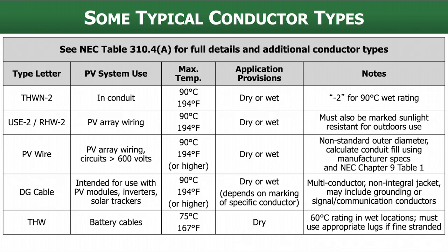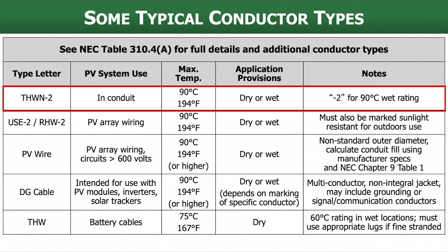One conductor we use a lot in conduit is THWN-2. It has a maximum temperature rating — that would be its insulation rating — of 90 degrees Celsius. That dash-2 tells us it has that 90°C rating in wet conditions, so it can be used in both dry and wet conditions. A conduit outdoors is considered a wet condition. This is what we typically run in conduit for DC wiring and AC wiring — a very common type of conductor.